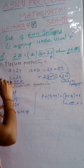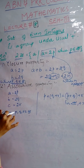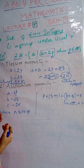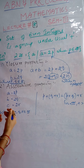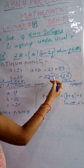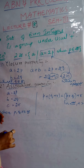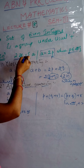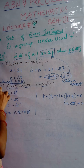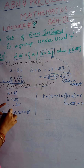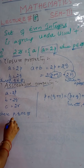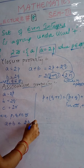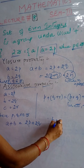The next property is the associative property. To verify this, we take three elements a, b, and c. Whenever they are elements of even integers, they are of the form 2 times integer multiples. So a = 2p, b = 2q, and c = 2r. Note that a+b = 2p+2q and b+c = 2q+2r.